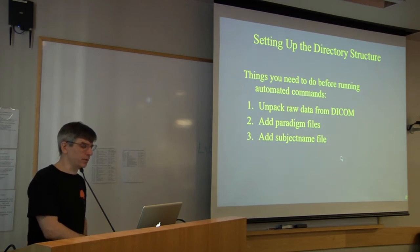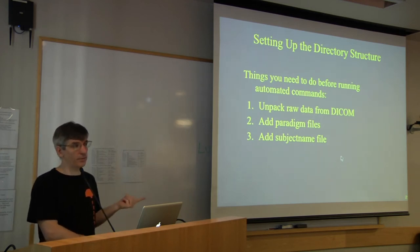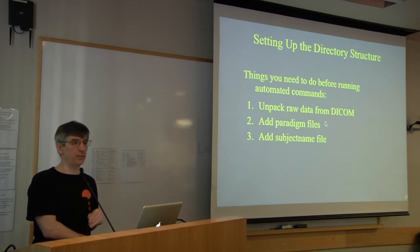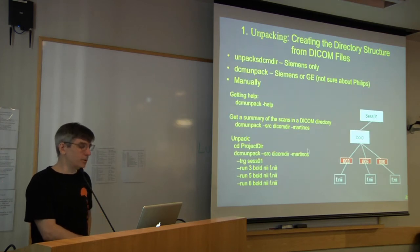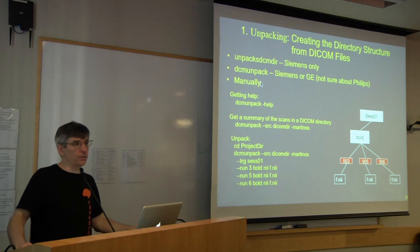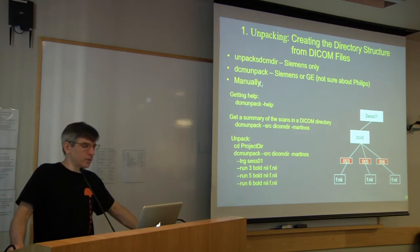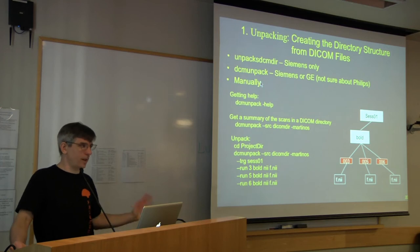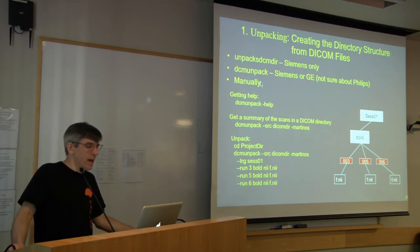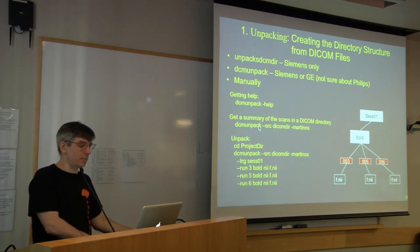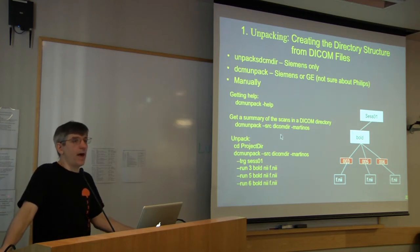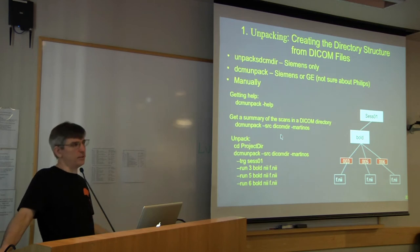When setting up the directory structure, you need to do three things: pack the raw data, add paradigm files, and create a subject name file. The DCM Unpack command is generically useful, not just for FSFAST. You run it with dash-src pointing to the DICOM folder. When you collect data with five or six functional runs, an anatomical, and possibly a fieldmap or DTI, everything from Siemens will be in one folder with randomly named files.